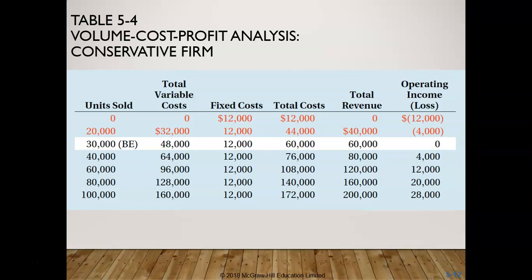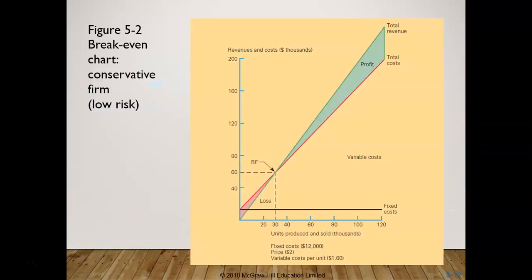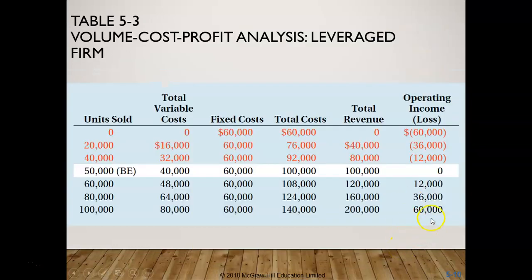For the conservative company, at zero units sold, the operating loss is only $12,000, and break-even is at 30,000 units — well below the 50,000 units needed by the less conservative firm. At 100,000 units, the conservative company earns only $28,000, compared to $60,000 for the highly leveraged firm, illustrating the trade-off between risk and potential profit.